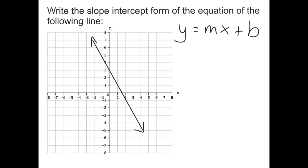Given the graph of a line, we should be able to come up with the equation in slope-intercept form. All we have to do is identify the slope and the y-intercept from the graph. Finding the y-intercept is really easy — that's the point where the graph crosses the y-axis. Here our y-intercept is 3, so b equals 3, giving us plus 3 in the equation.